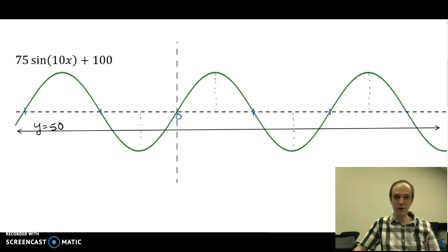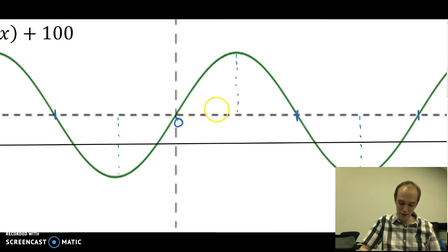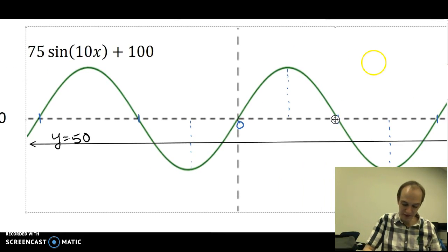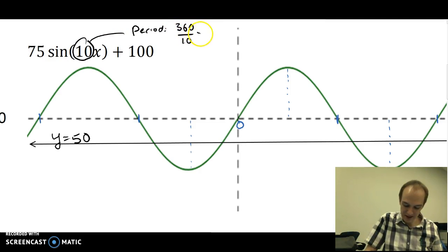Before we go any further into solving, we need to look at this trig graph a little bit. You'll notice that I put a 0 on the axis, but I haven't done any scaling here. So let's look at the original equation. I'm going to look at this 10. I need to find the period.